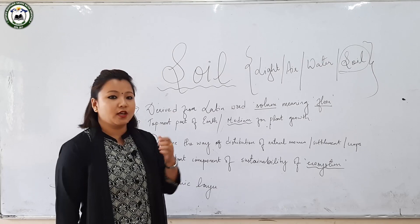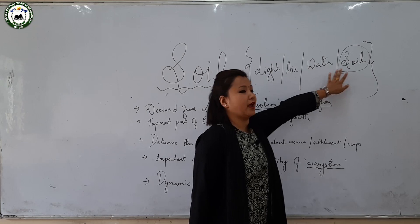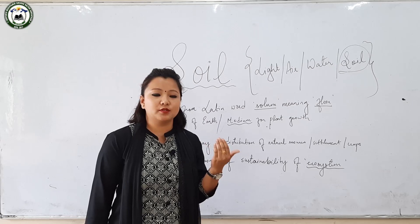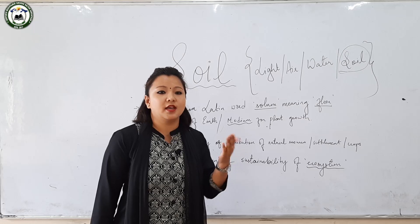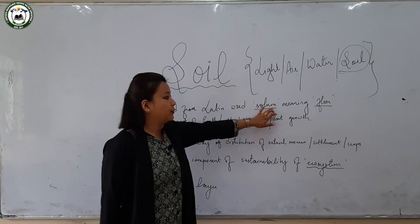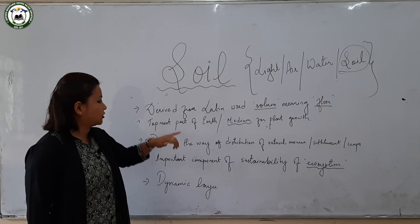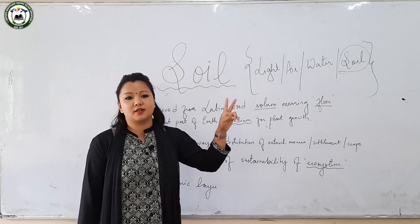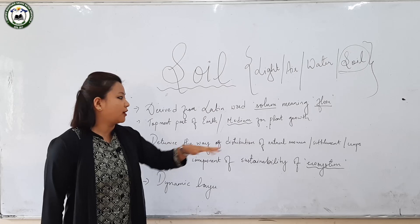The four major elements are light, air, water, and soil. Soil is regarded as the base or floor for plant growth, and those plants are what we feed upon — we consume plants directly or indirectly for our sustenance. Soil has been derived from the Latin word 'solum' meaning floor, and it is the topmost part of the earth which acts as a medium for plant growth. Soil can be defined as the organic and inorganic materials placed on the surface of the earth which act as a medium for plant growth.